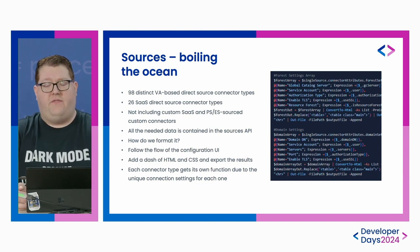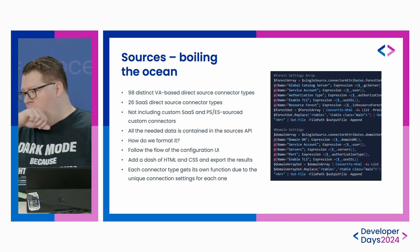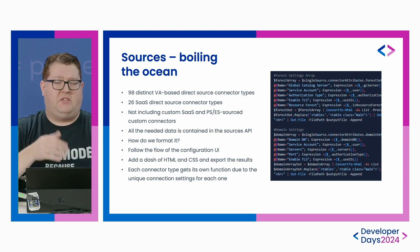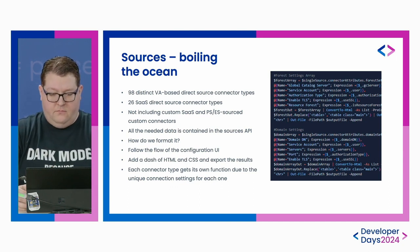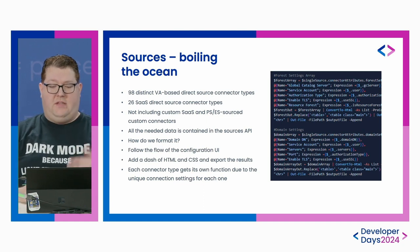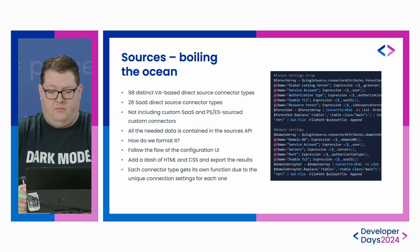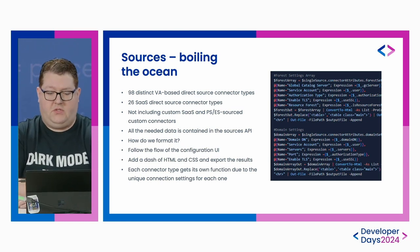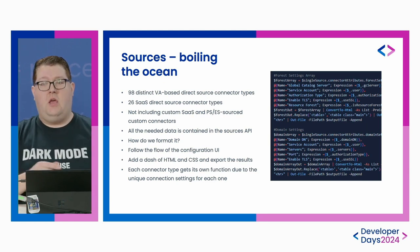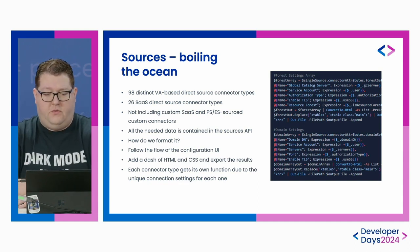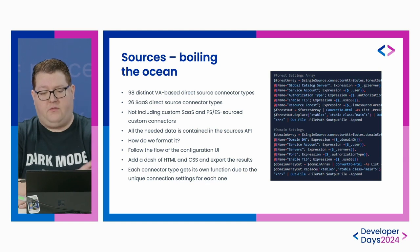The path we chose was to follow the flow of the user interface — connection settings, aggregation settings, et cetera. We pull in the JSON, add a little pinch of CSS, a dash of HTML, and output it to a file. Because each source connector type is unique, each one has its own custom PowerShell function: get-Workday, get-ActiveDirectory, et cetera.